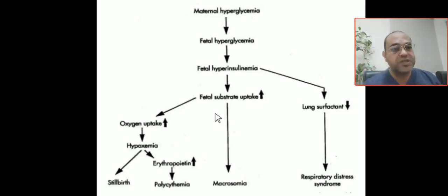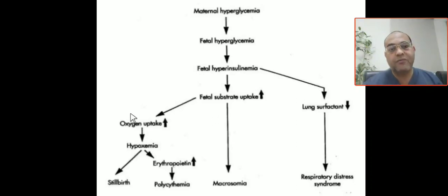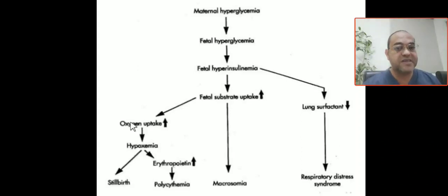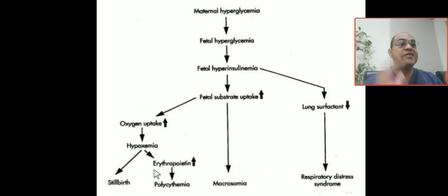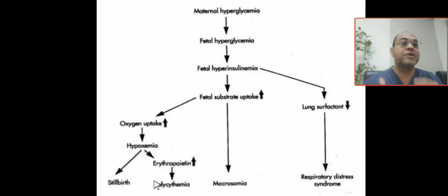Regarding oxygenation: hyperinsulinemia increases oxygen demand, leading to hypoxemia. Hypoxemia leads to perinatal asphyxia, and an increased erythropoietin response. When erythropoietin increases, hemoglobin mass increases and the baby develops polycythemia. Polycythemia leads to hyperbilirubinemia and can also lead to renal vein thrombosis.